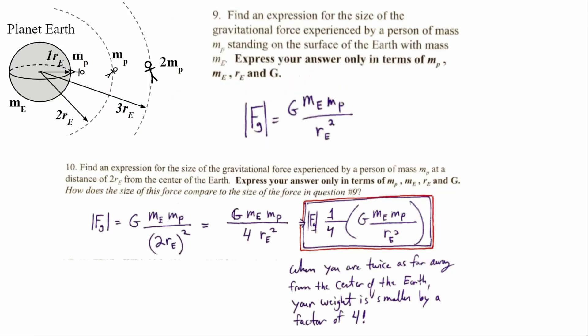For numbers 9, 10, and 11, these were proportional reasoning questions. Number 9 asked to define an expression for the gravitational force on a person of mass MP standing on the surface of the Earth with mass ME. We just plug the given variables into Newton's law of universal gravitation: big G times ME times MP, divided by the radius of the Earth squared.